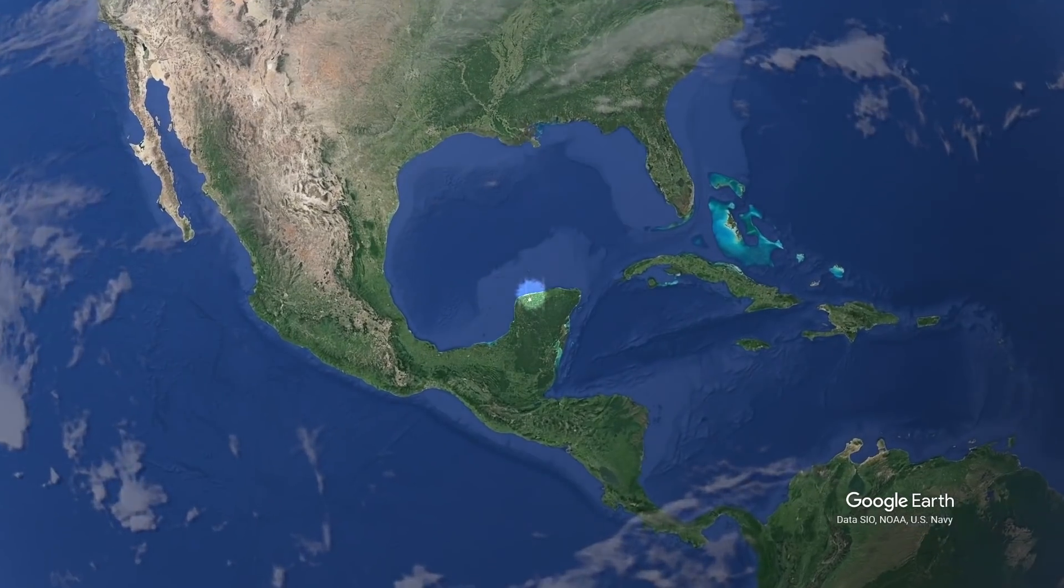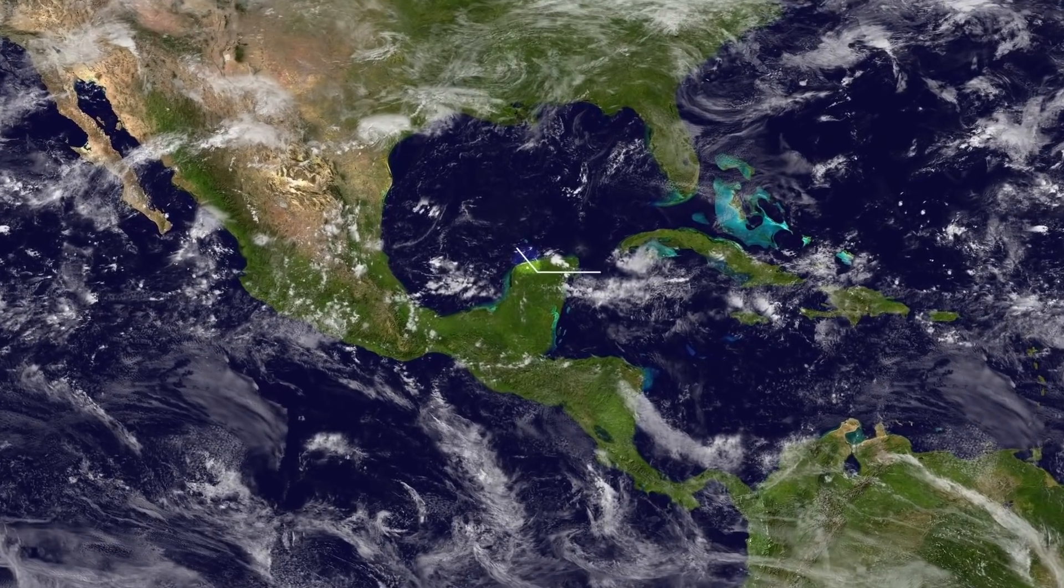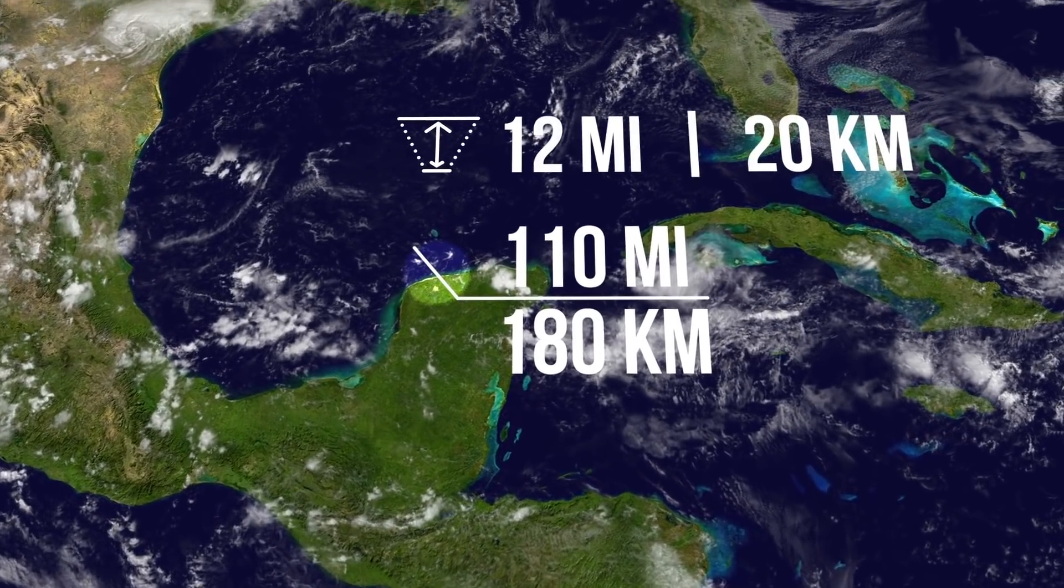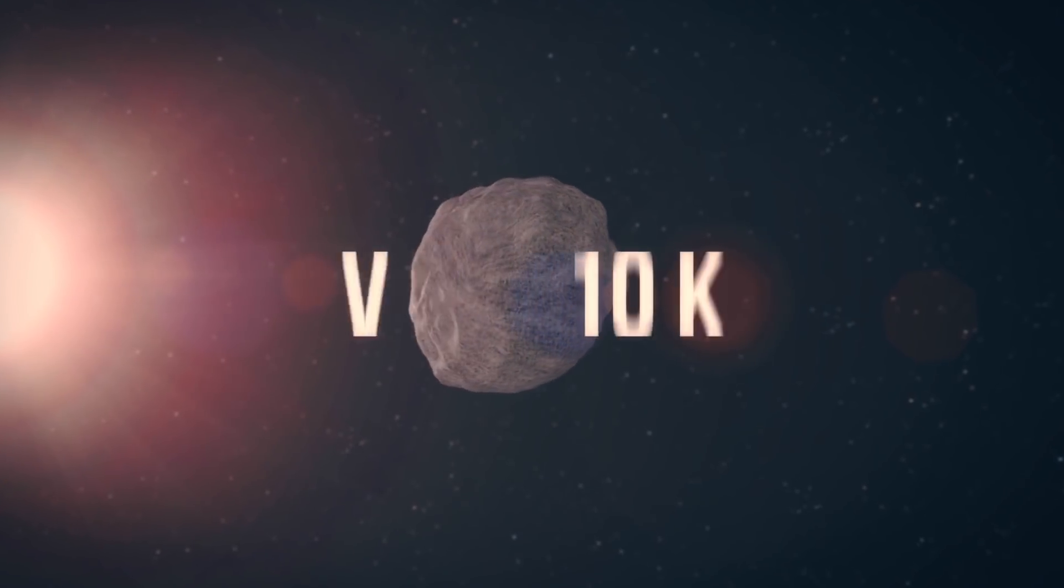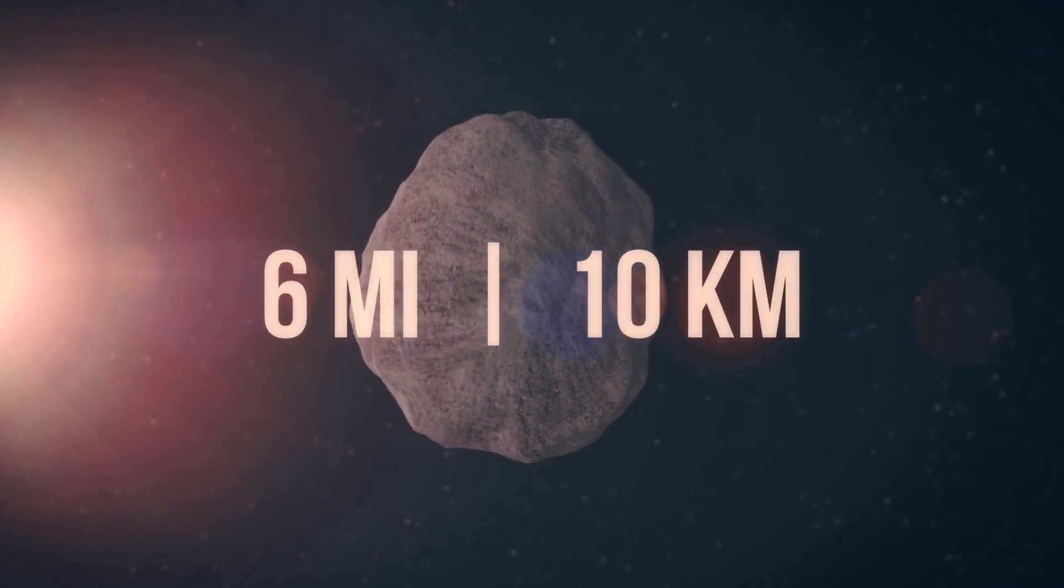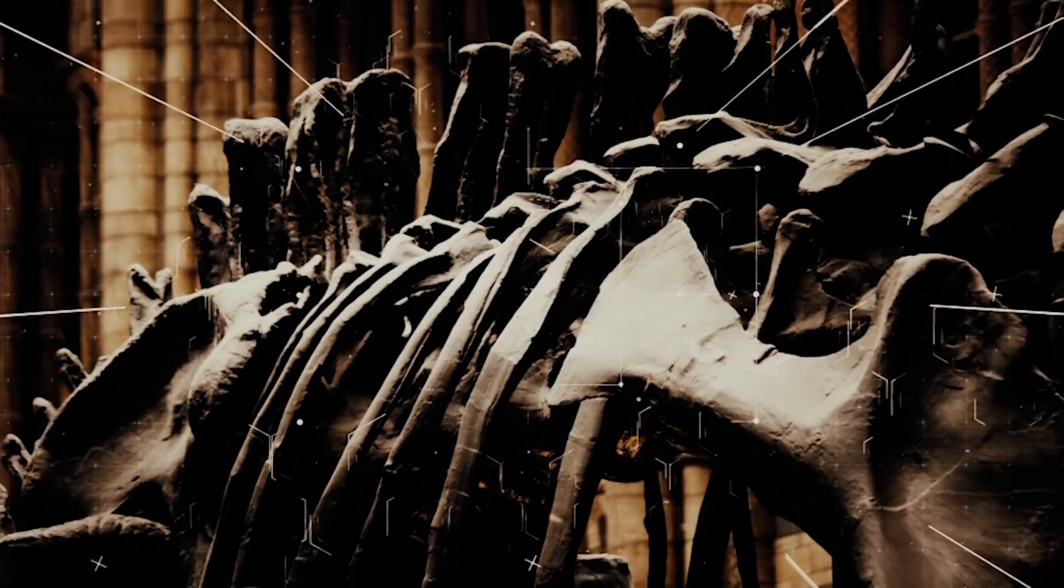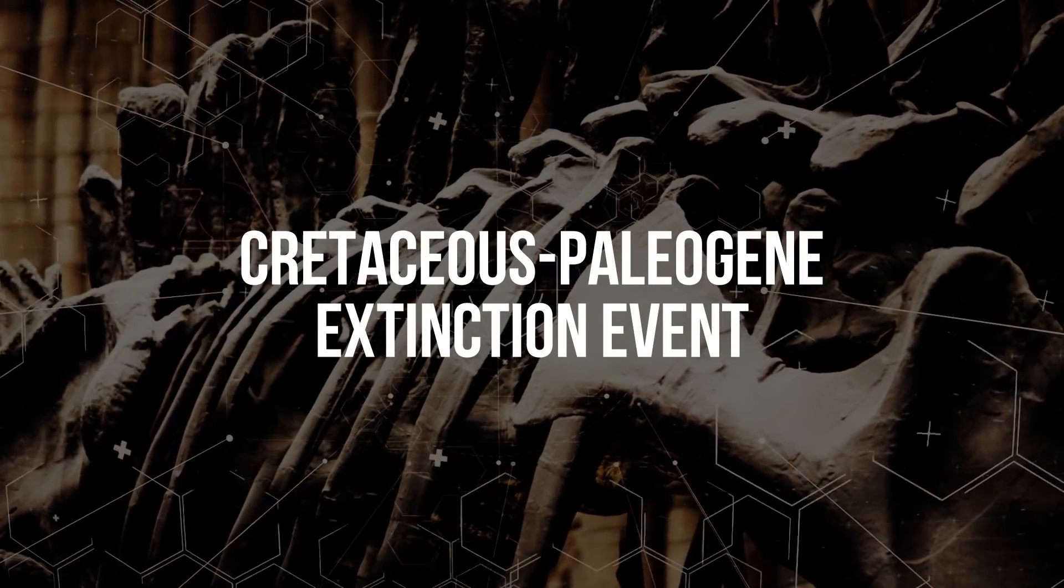Here is Chicxulub Crater, a giant dent in the Earth's crust with a diameter of up to 110 miles and an initial depth of up to 12 miles, almost twice as deep as the Mariana Trench. It reminds of the 6-mile diameter space block that crashed into Earth 66 million years ago and triggered the Cretaceous-Paleogene extinction event on our planet.